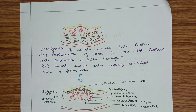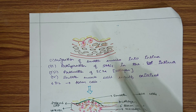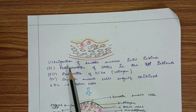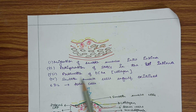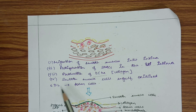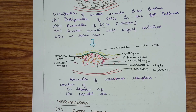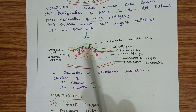There will also be migration of smooth muscle cells from the tunica media into the intima. These smooth muscle cells will also engulf the oxidized LDL and form foam cells. Additionally, there will be proliferation of smooth muscle cells in the intima and production of extracellular matrix, which is collagen. After this step, there will be formation of complete atherosclerotic plaques.